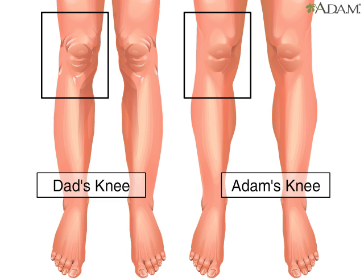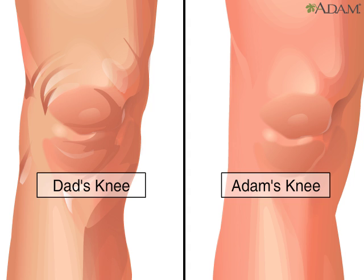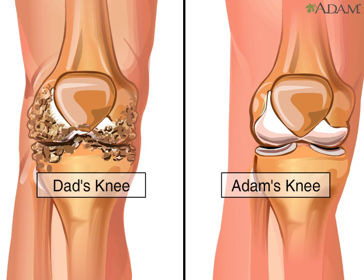Osteoarthritis is the most common form of arthritis and is associated with the aging process. Even from the outside, you can see that the knee of an older person looks considerably different than that of a younger person. Let's take a look at the joint itself to see the differences.